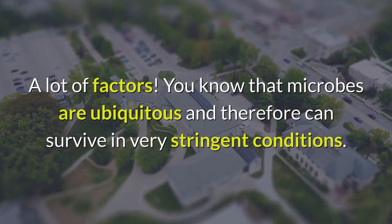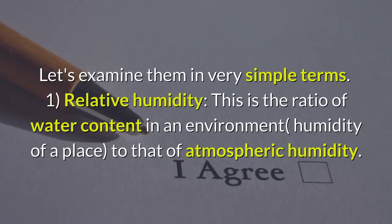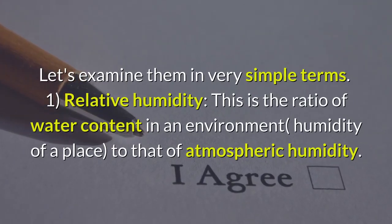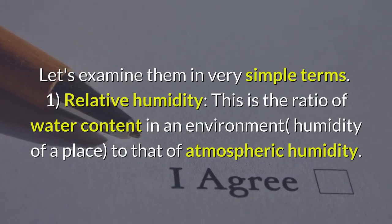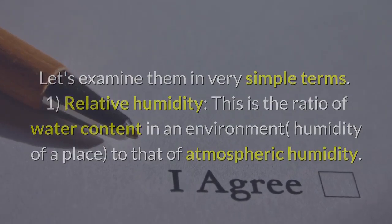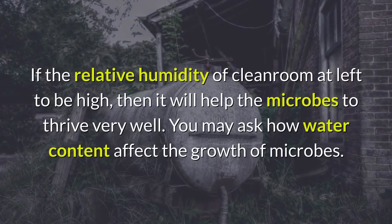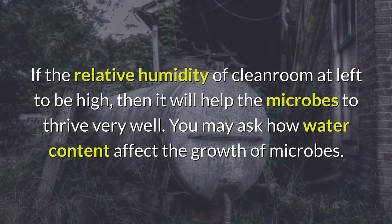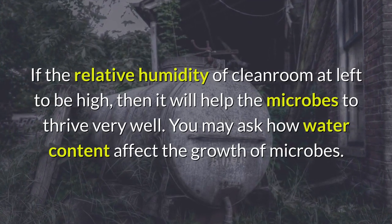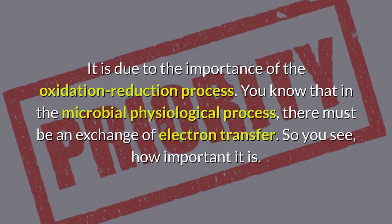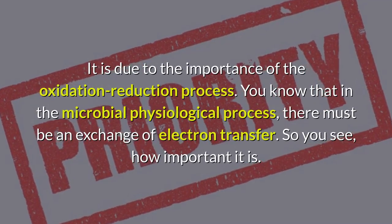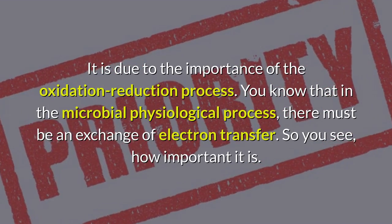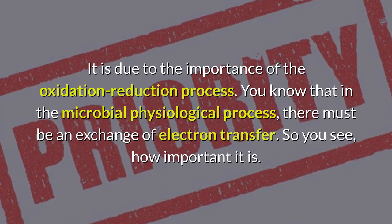One: relative humidity. This is the ratio of the water content in an environment to that of atmospheric humidity. If the relative humidity of a clean room is left to be high, it will help the microbes to thrive very well. You may ask how water content affects the growth of microbes — it is due to the importance of the oxidation-reduction process. In the microbial physiological process, there must be an exchange of electron transfer.